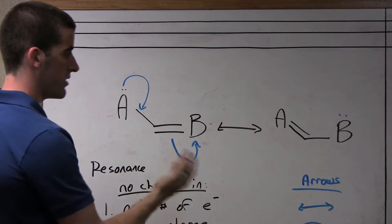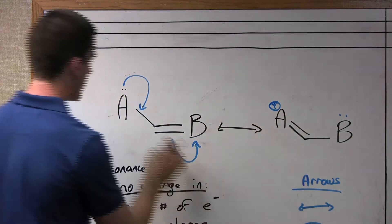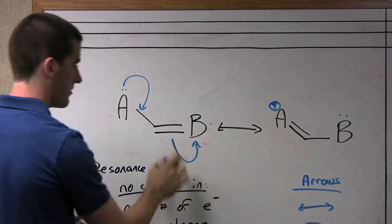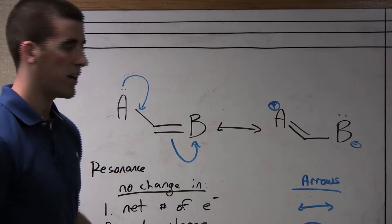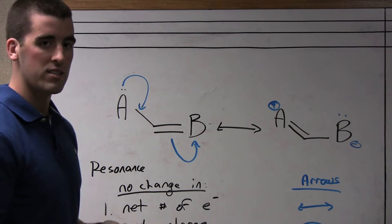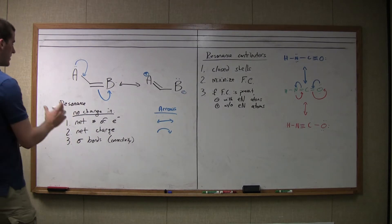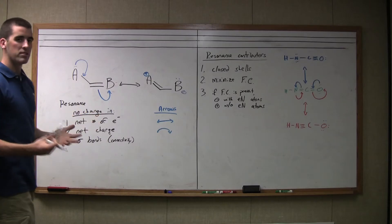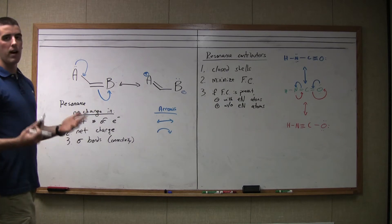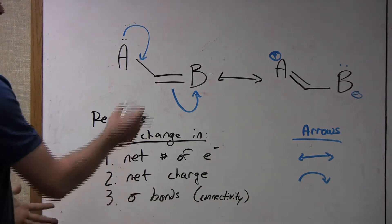A reminder from formal charges: the movement of these delocalized electrons causes charges to be present. In most cases, the atom that no longer has the electrons will have a positive charge, and the atom that gained those pairs of electrons from the double bond will be negative. Resonance is the movement of delocalized electrons throughout the connectivity of a molecule — you're not going to change the connectivity. The three conditions for resonance are: the net number of electrons does not change, neither does the net charge, nor the sigma bonds, which is the connectivity. Even though electrons were moved, the net charge stayed the same — the positive and negative cancel each other out — and the sigma bonds did not move.